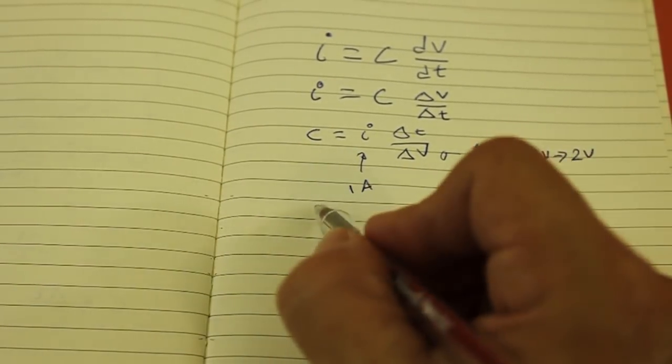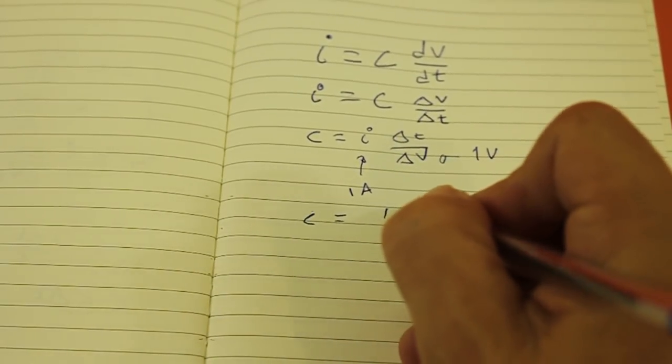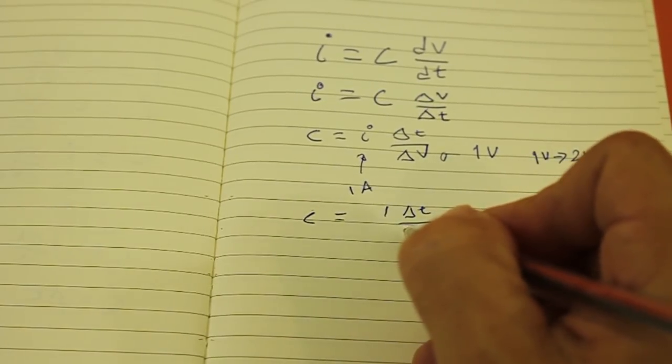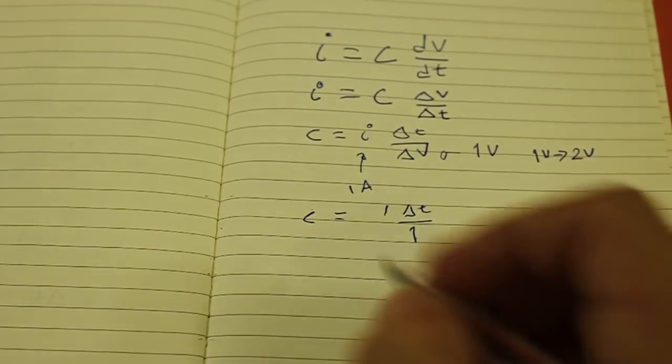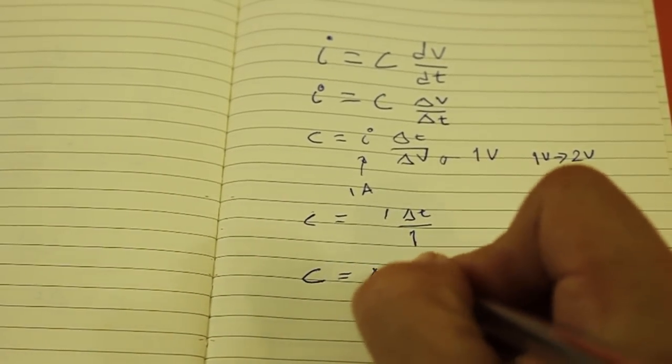So the formula becomes capacitance equals 1 times delta time divided by delta V, which is 1 volt. So capacitance equals time interval.